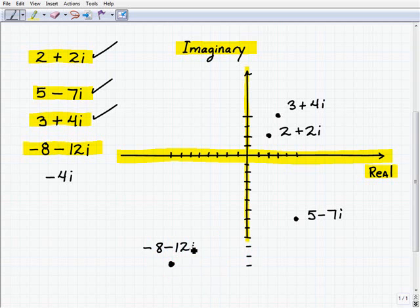Negative 4i by itself. Now, remember, complex numbers contain both a real and imaginary part. So when you're saying negative 4i, you might be asking, well, where's the real part? Well, really, that number could be written as 0 plus negative 4i. So simply, all you're going to do is put a point on the imaginary axis. 1, 2, 3, 4. And there you go. There is negative 4i.